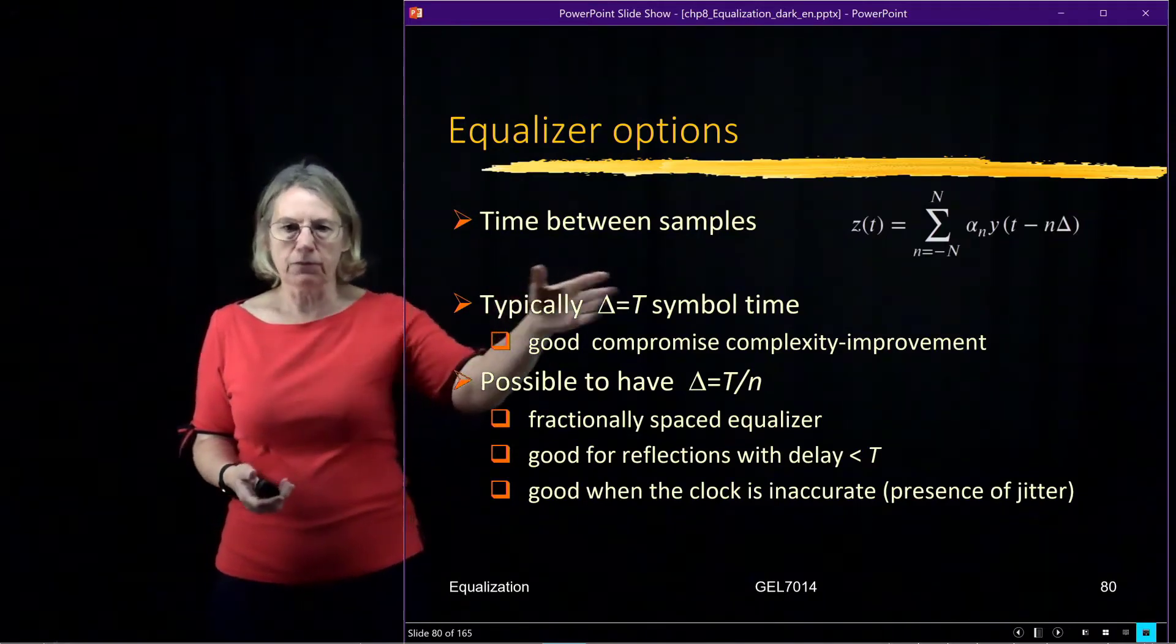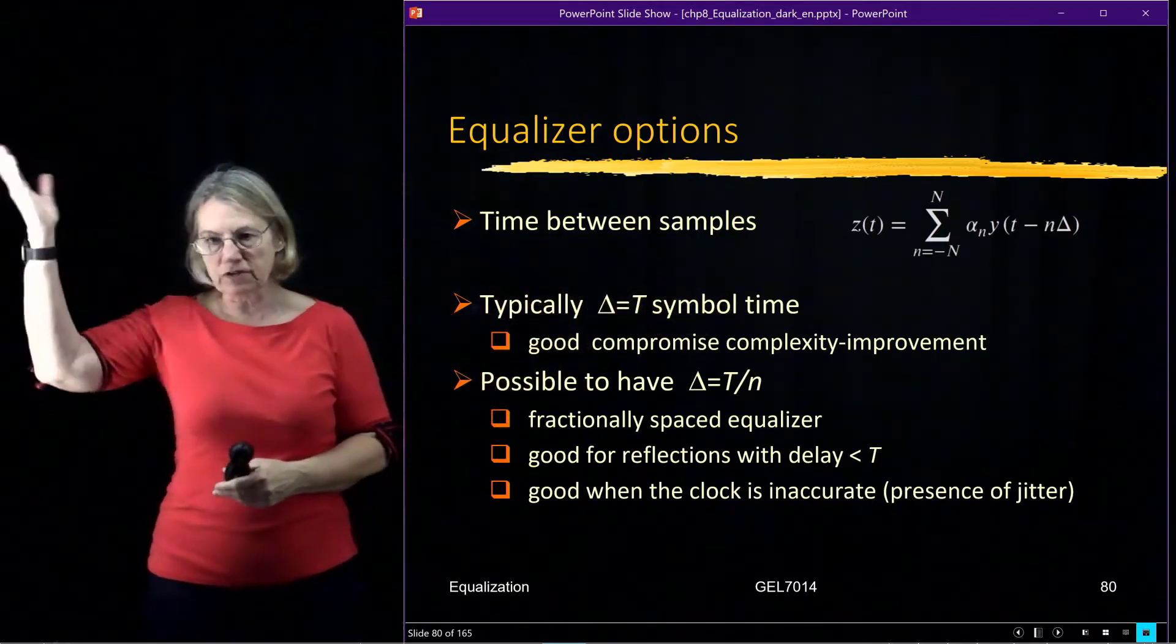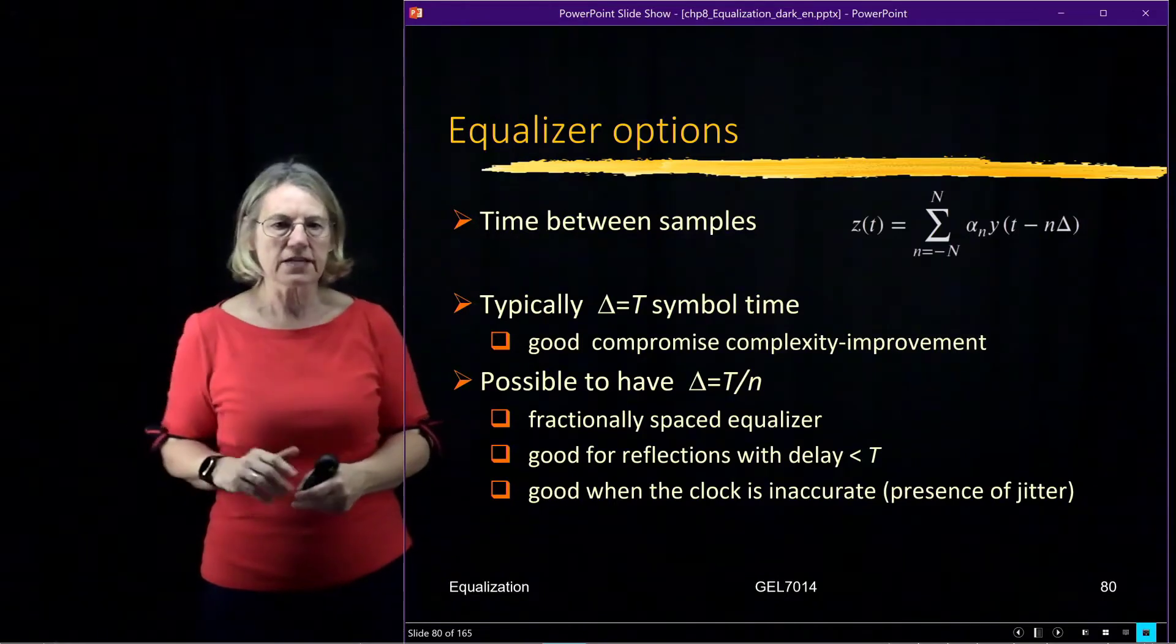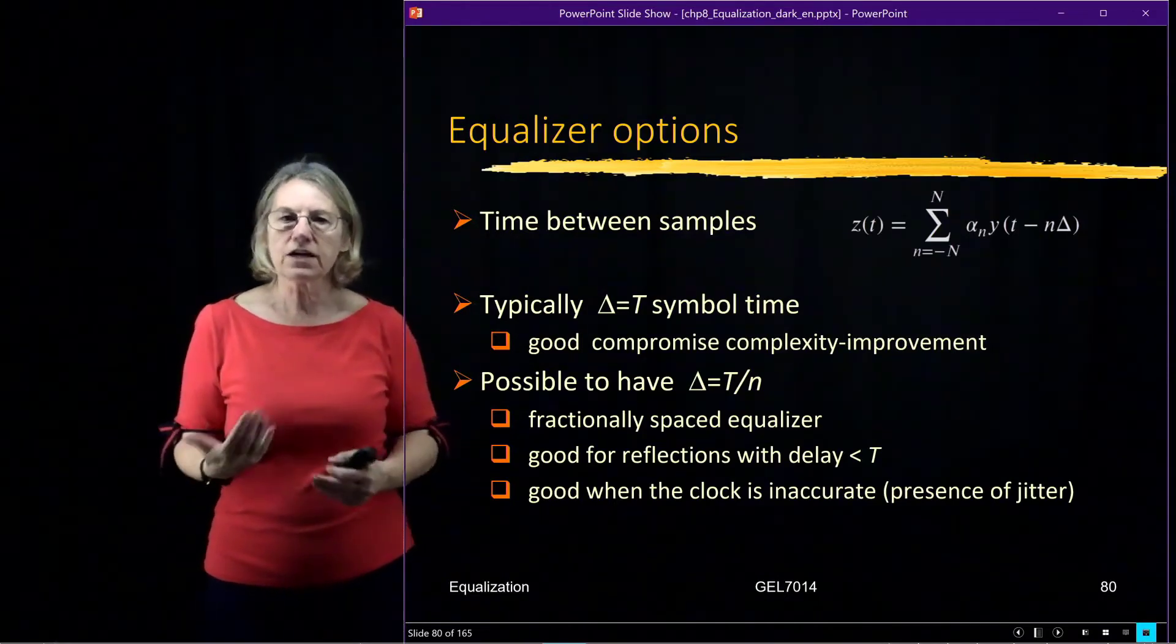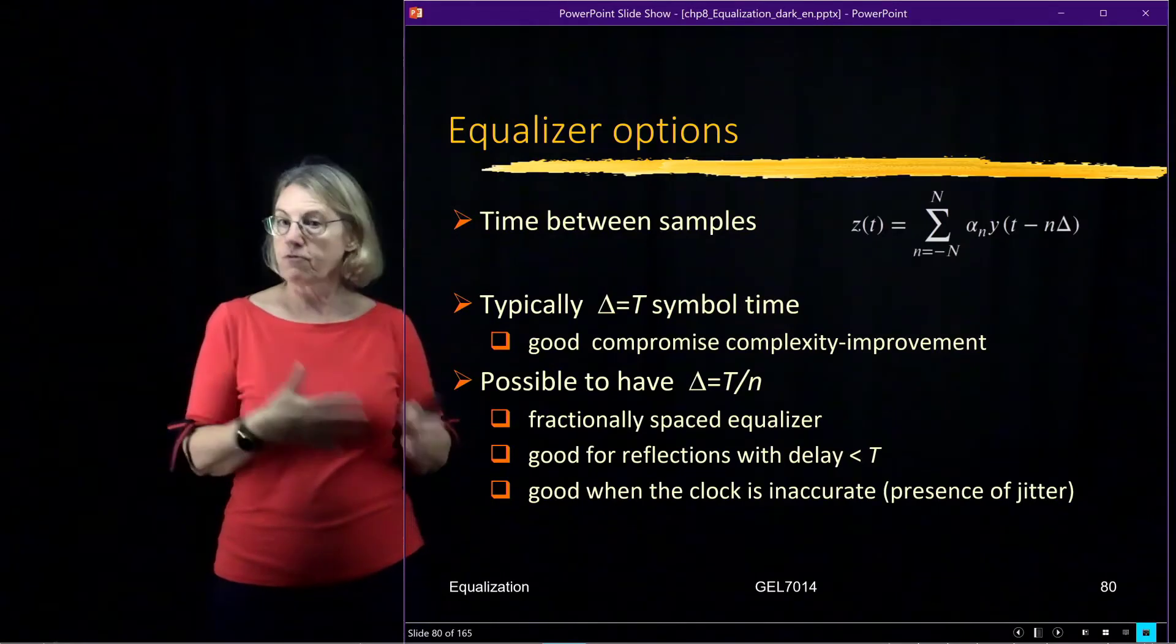And typically, I mentioned that we would be doing the symbol time. The examples we look for zero-forcing, we assume that this was the case. It seems to be a good compromise between the complexity and the performance.